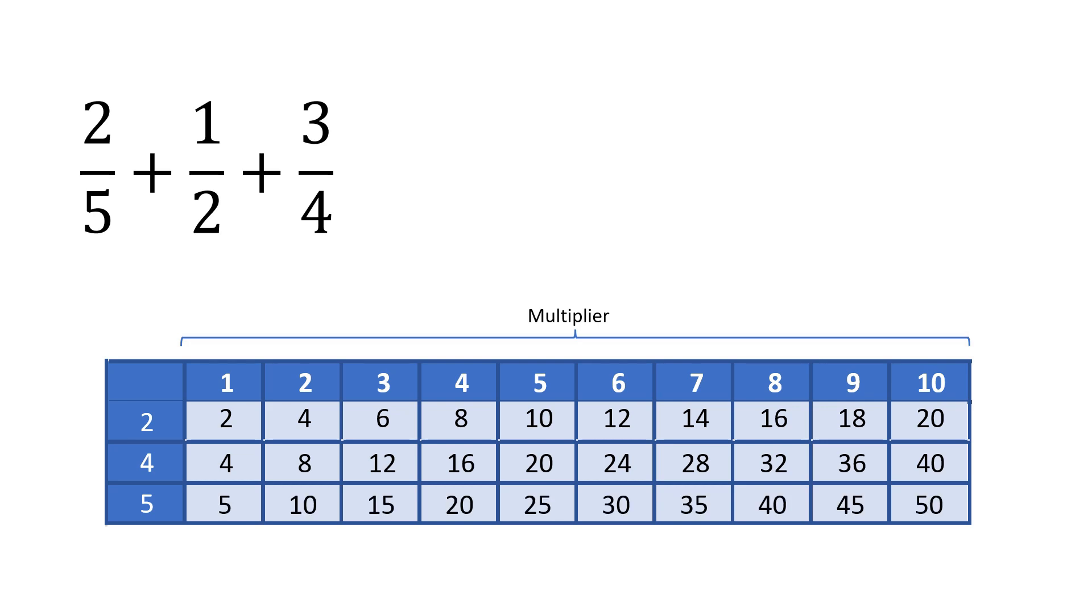The least common multiple of 2, 4, and 5 is 20.